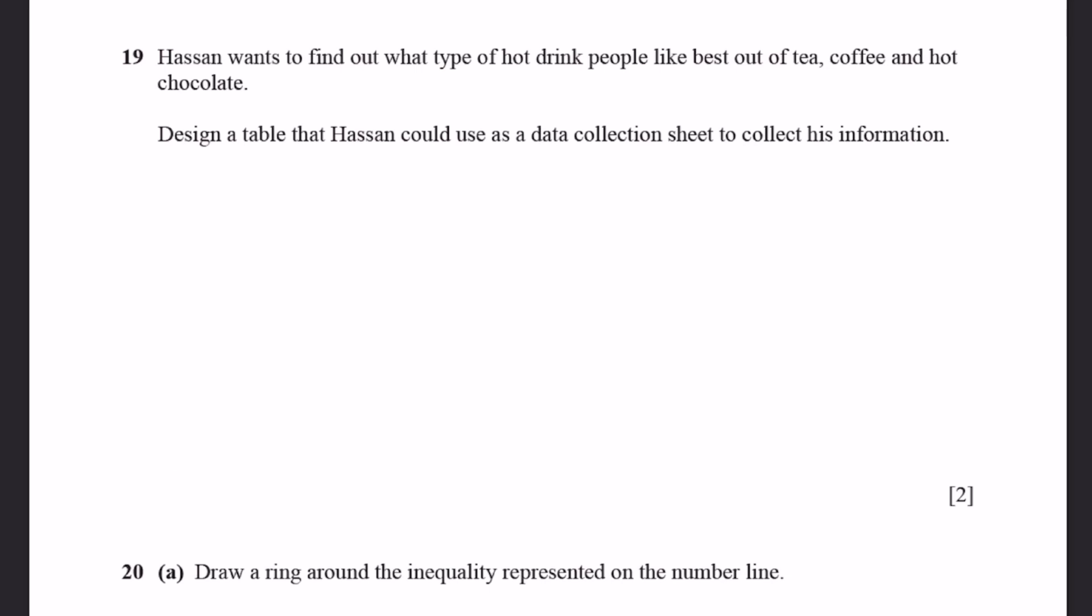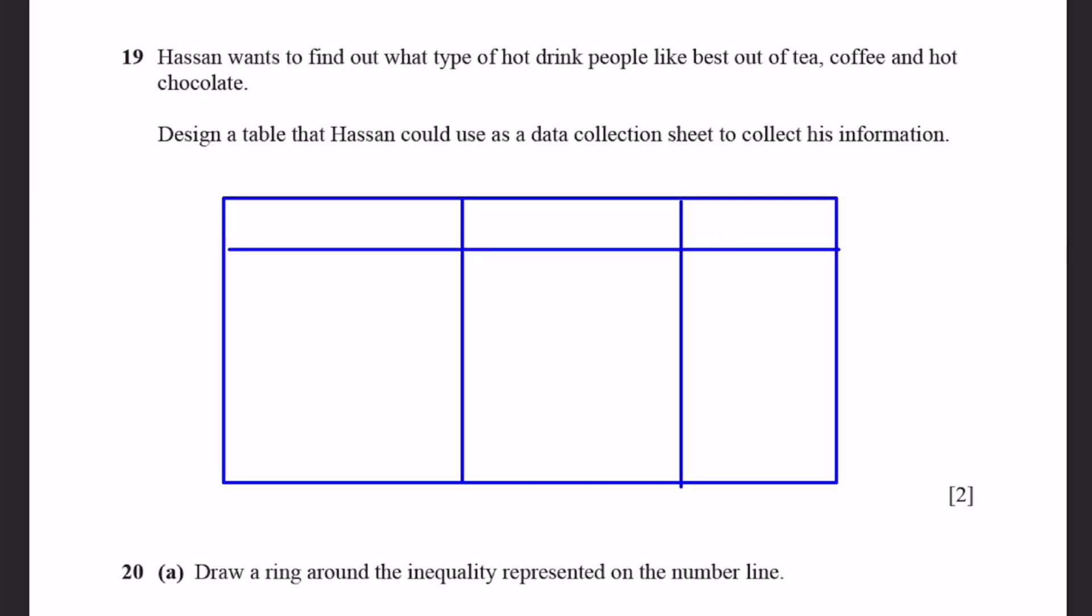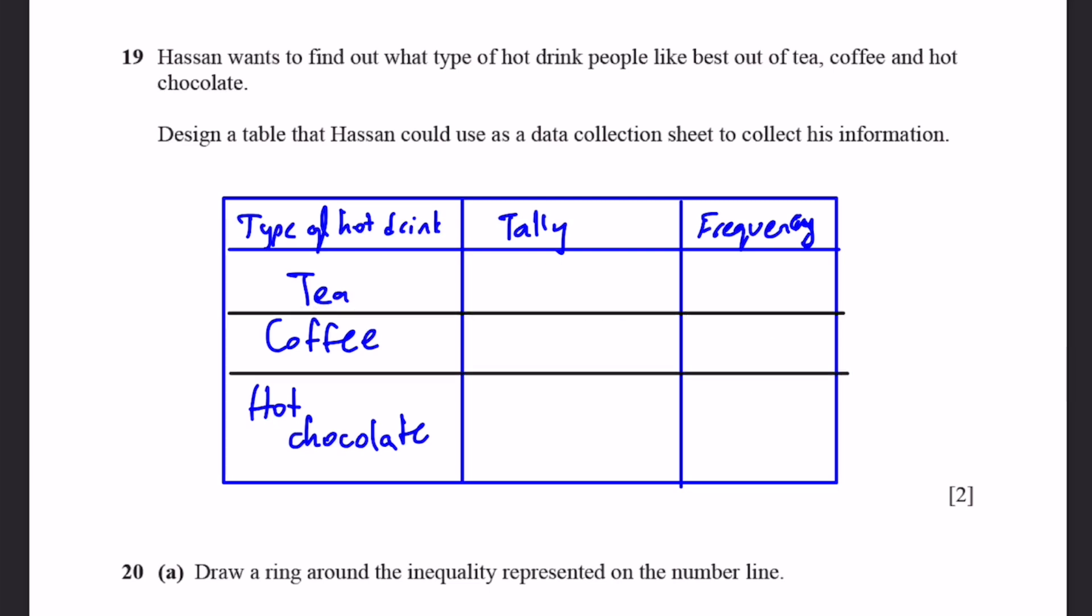Question 19. Hassan wants to find out what type of hot drink people like best out of tea, coffee, and hot chocolate. Design a table that Hassan could use as a data collection sheet to record his information. We can make a table just like this and make three columns. One for drink, one for tally, and one for frequency. So, make a heading column. Type of hot drink. And then we have tally and we have frequency. And now we write tea, coffee, hot chocolate. And divide it into separate rows.